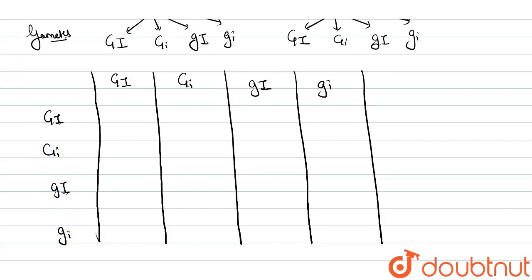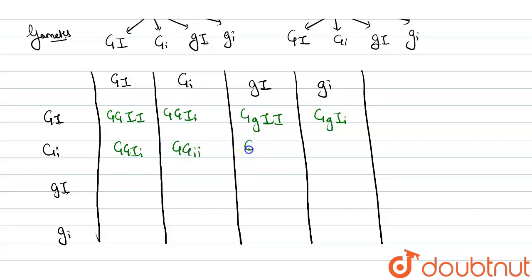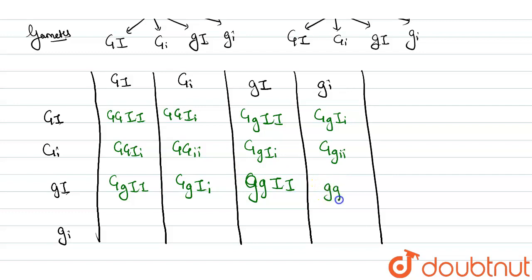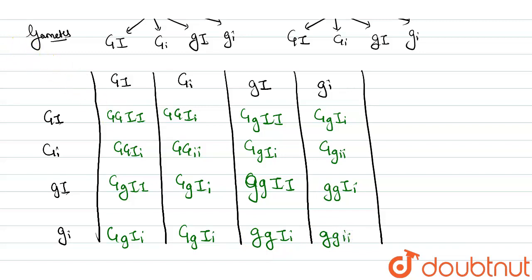Filling the Punnett square: GGII, GGIi, GgII, GgIi; GGIi, GGii, GgIi, Ggii; GgII, GgIi, ggII, ggIi; GgIi, Ggii, ggIi, ggii. These sixteen combinations represent all the possible genotypes in the F2 generation.